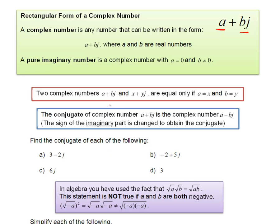We compare two complex numbers by comparing their real number parts, in this case a with x and b with y. If those are equal, then the complex numbers are equal.